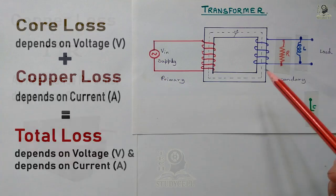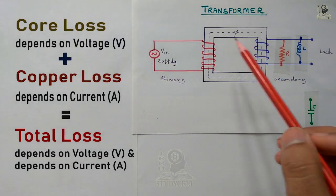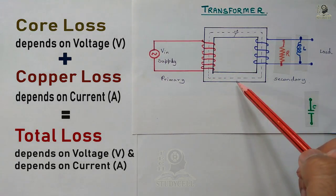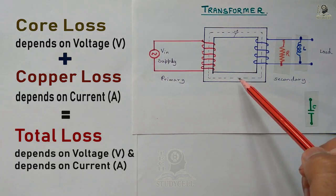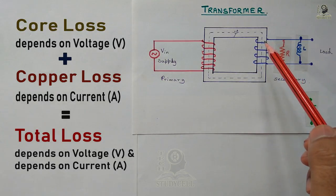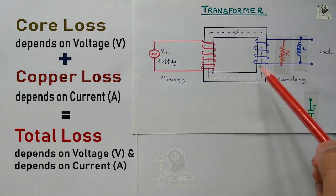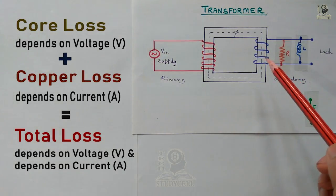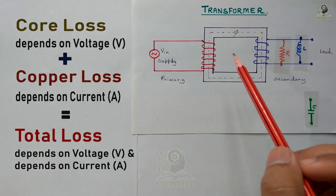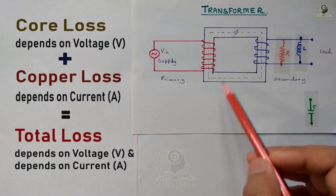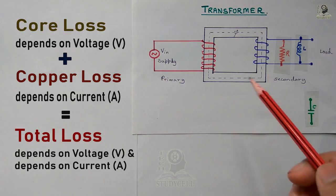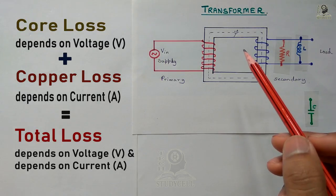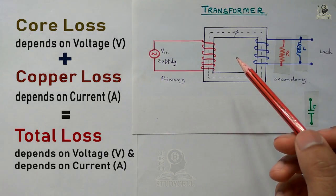So we have seen two types of losses: core loss and copper loss. Core loss depends on the voltage of the transformer, as the magnetic property of the transformer core is constant. Copper loss depends on the current flowing through the winding, as the resistance (R in I²R) is constant for a winding. Therefore, the losses in the transformer depend on both voltage and current only. So we rate the transformer in VA, or kVA, or MVA if the rating is higher.